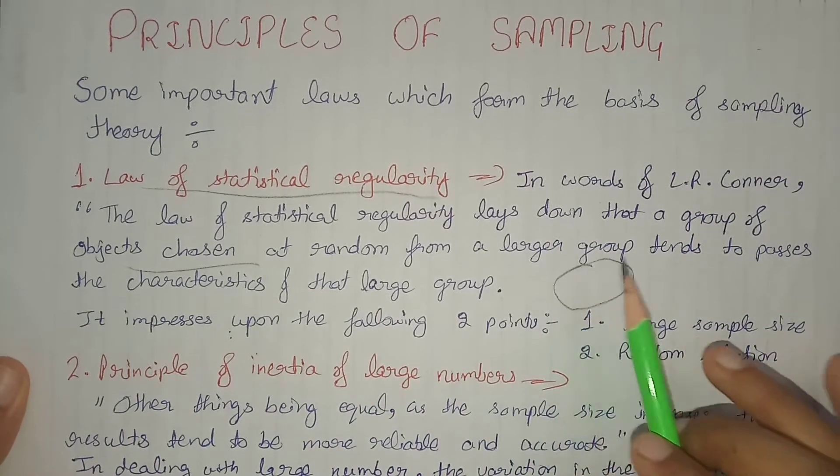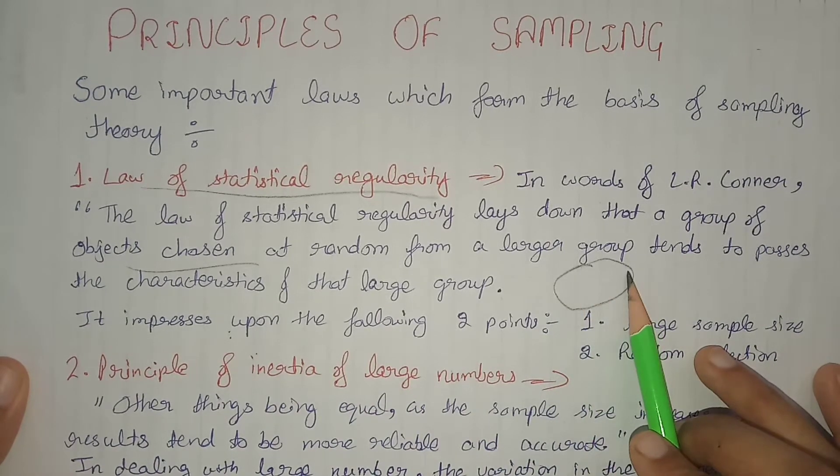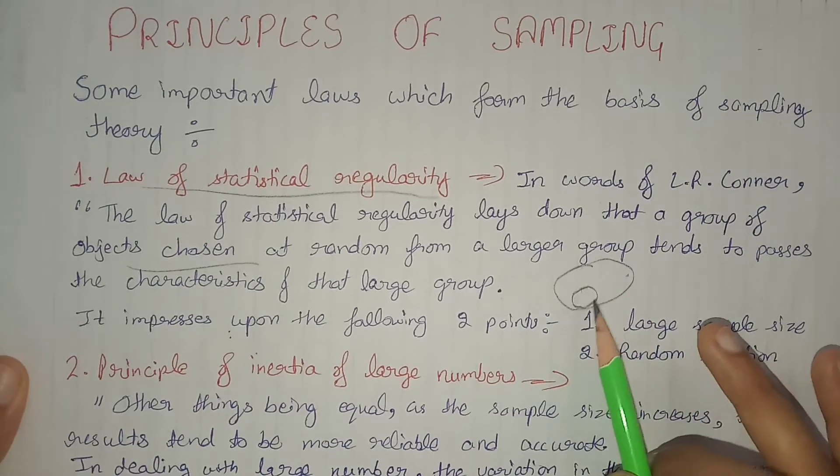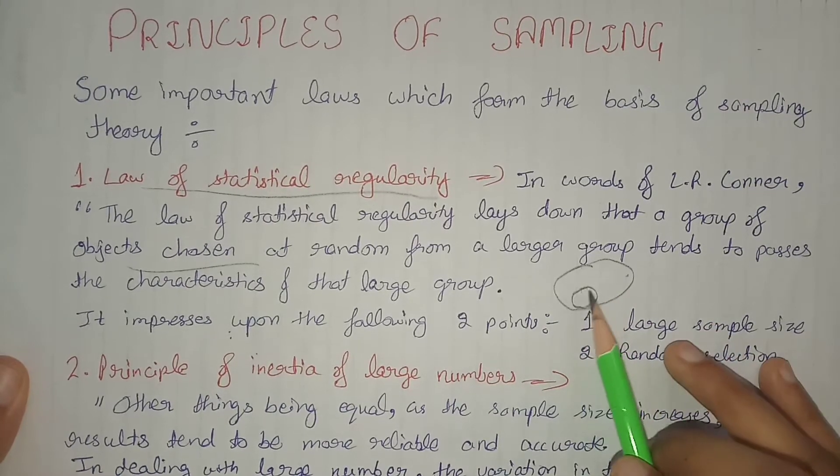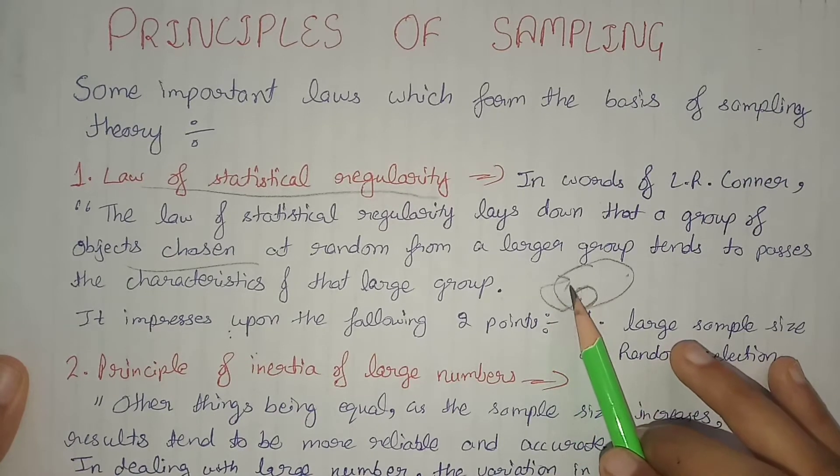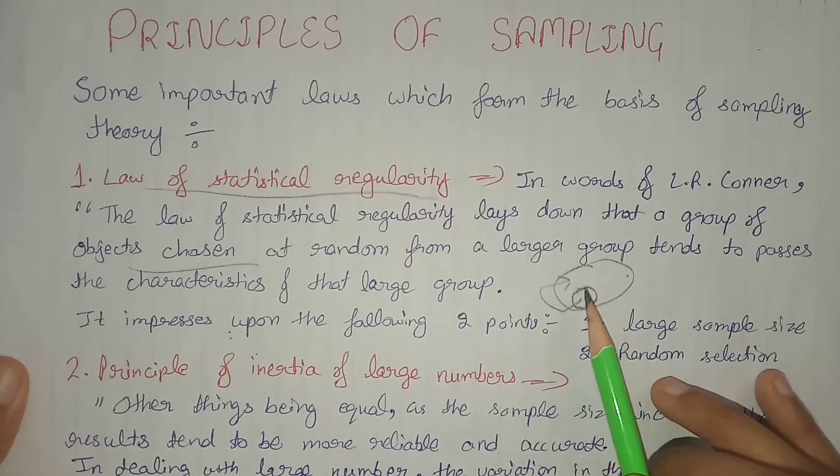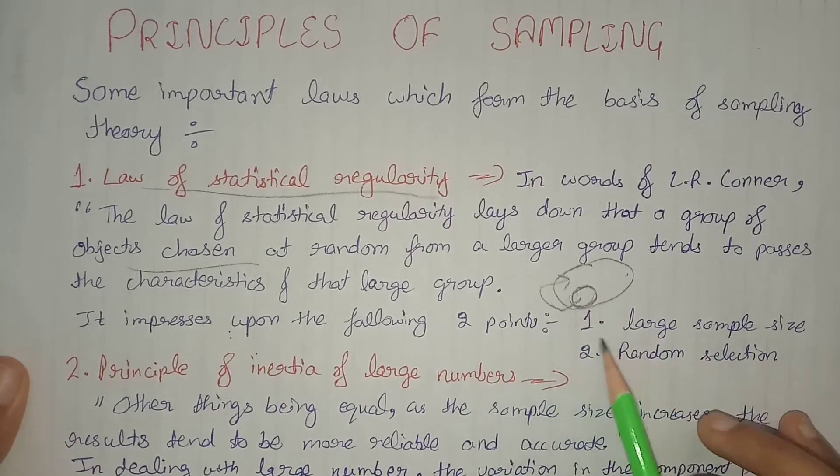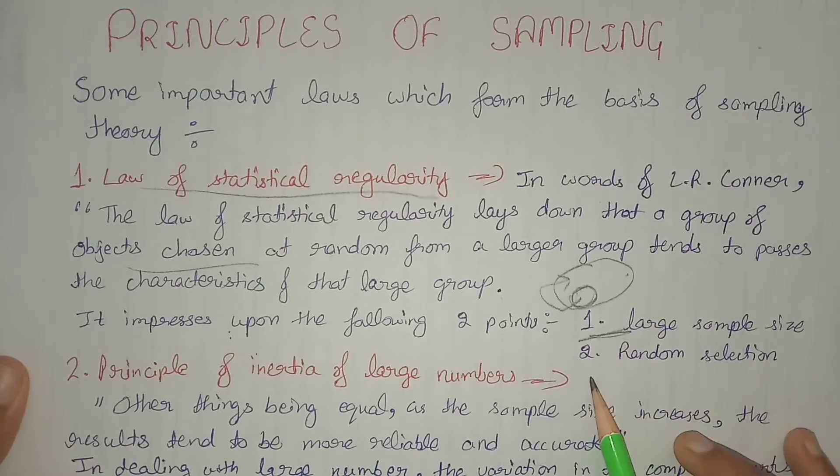That is, if we have a population which is a large group and we have a sample which is a small group, then the sample characteristics will be almost the same as the population characteristics. But here there are two conditions. First is the sample should have a large size, and second is we will randomly select the sample.